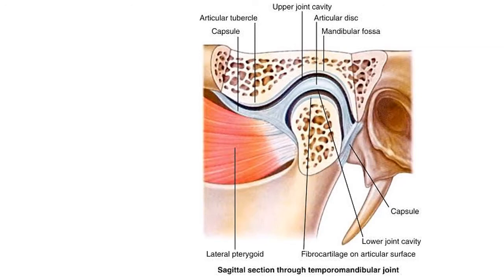The joint cavity is divided into two compartments by a disc called the articular disc. The upper compartment is called the upper menisco-temporal compartment, and the lower is the menisco-mandibular compartment. The upper compartment permits gliding movements, while the lower compartment permits both gliding and rotational movements.